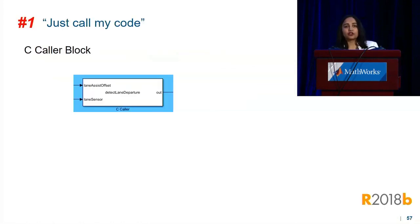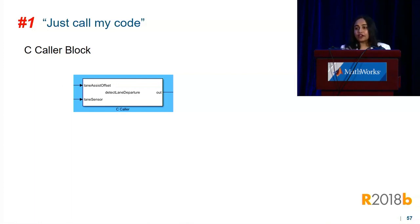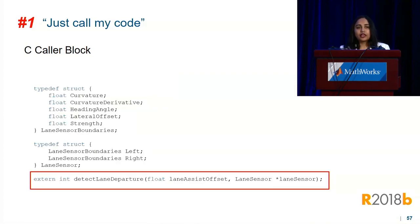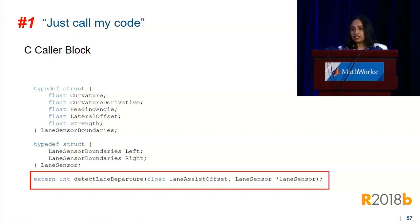The first strategy is what we're calling the 'just call my code' mode. In 18b we're very excited to introduce the C Caller block, which vastly simplifies the way you can bring in C functions into Simulink. Here's an example of a C function that we're bringing into Simulink, and as you can see the interface types include C structures.